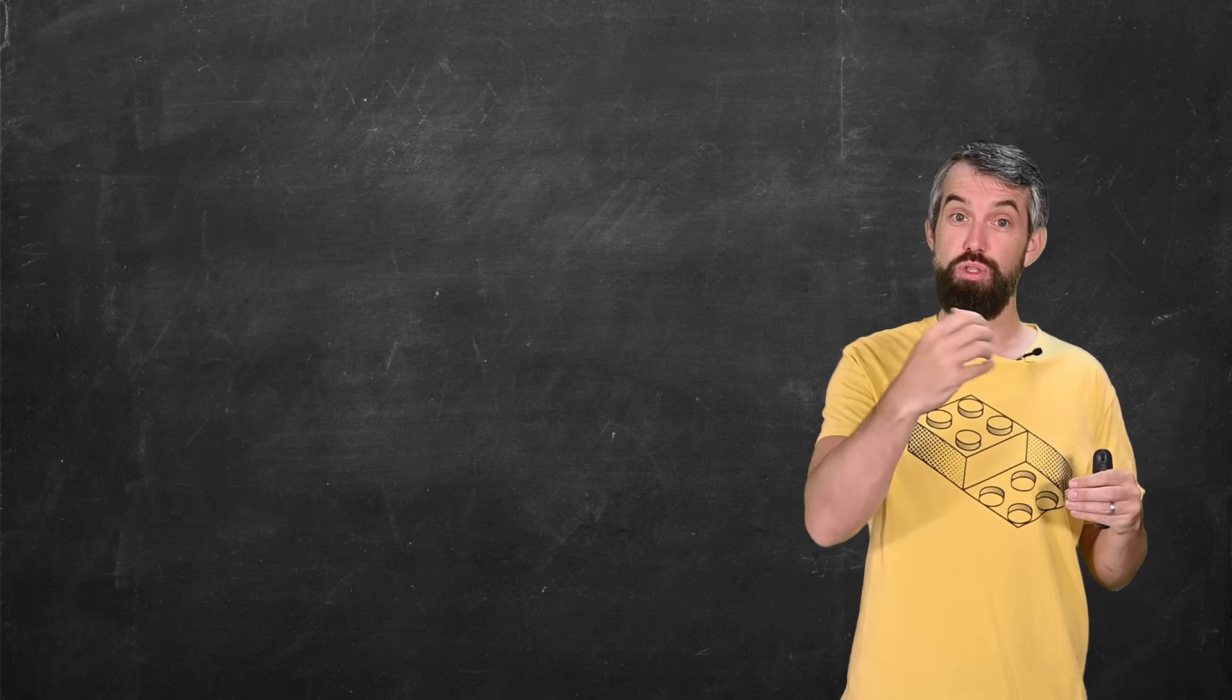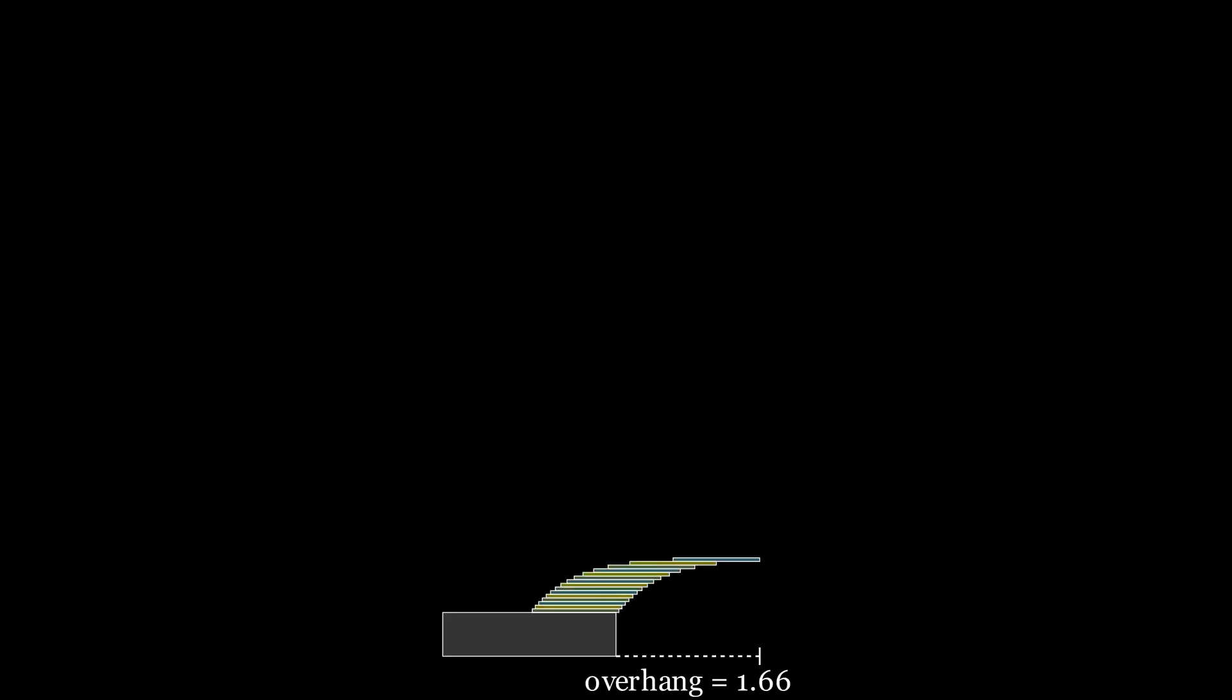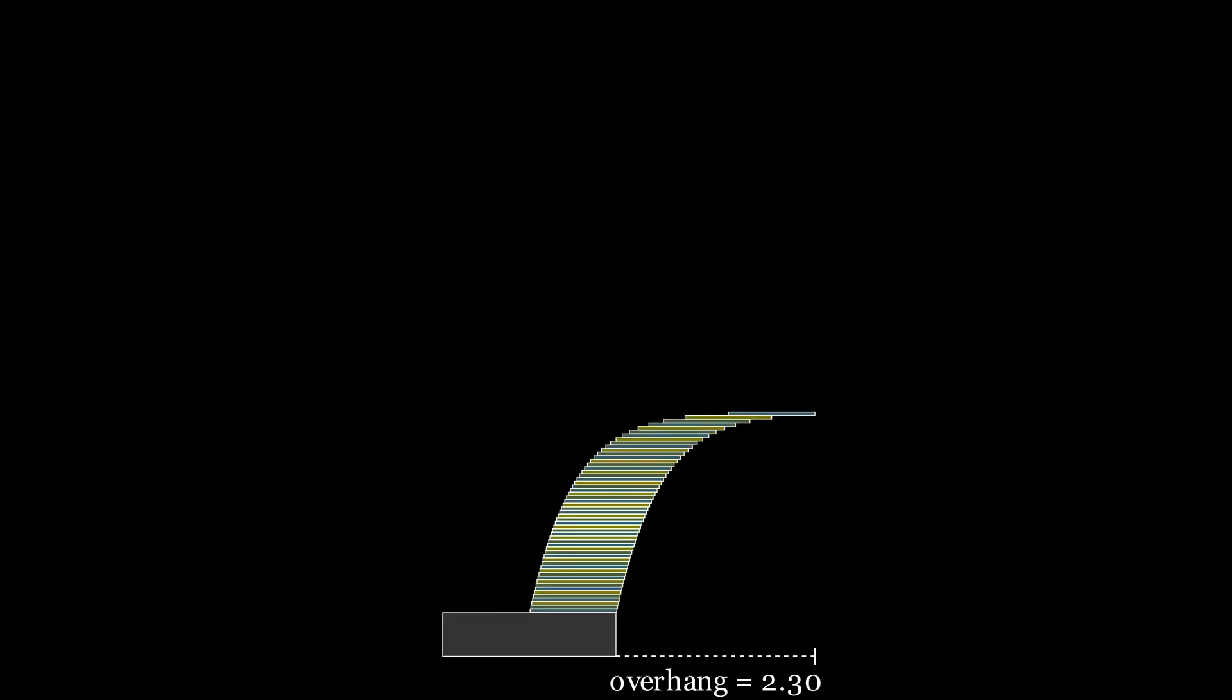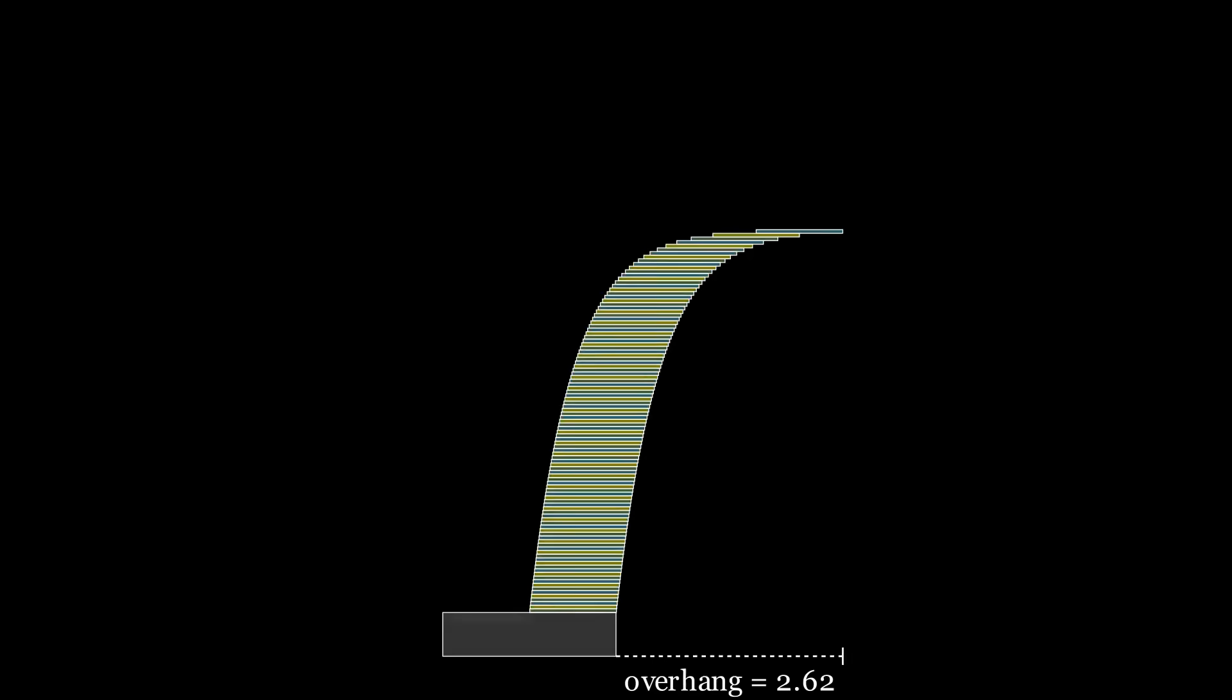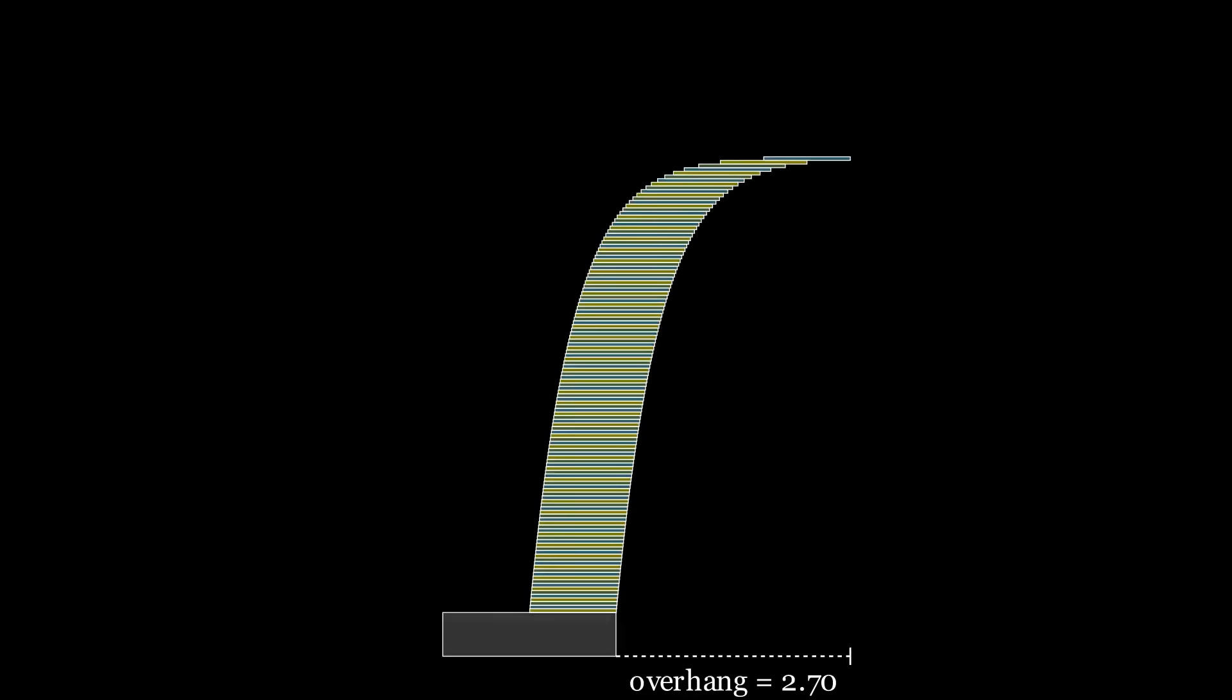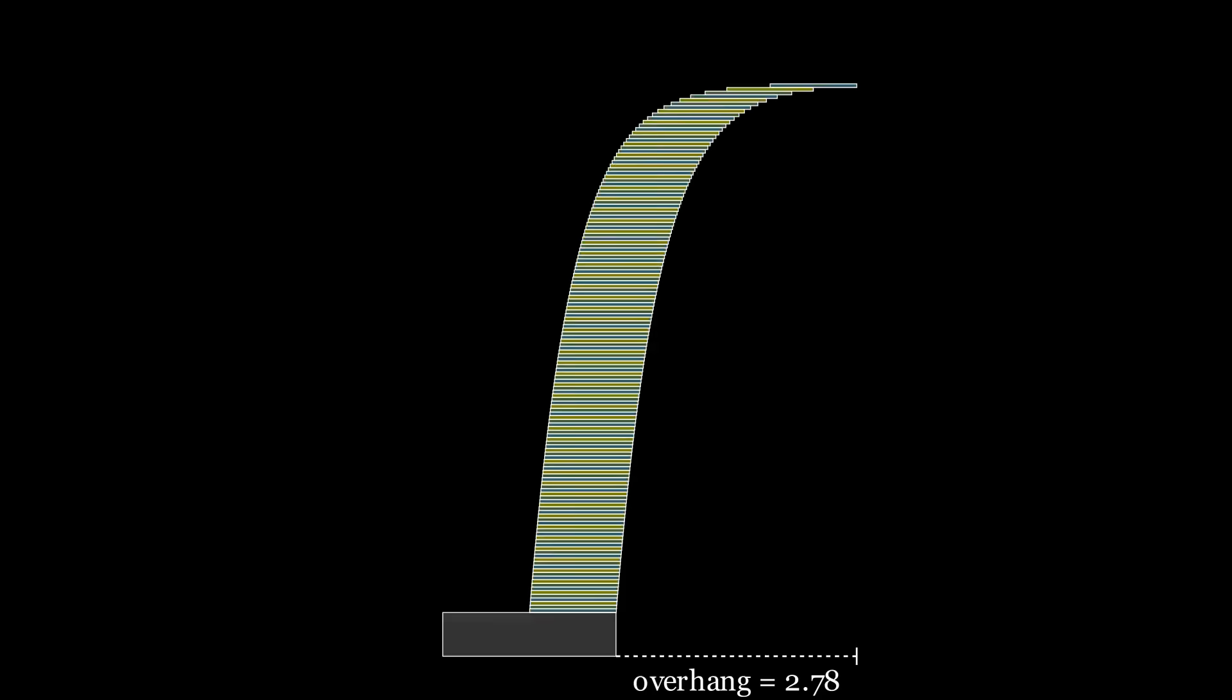Instead of looking at small values of n and asking what is the optimal stack for a small n, instead let's look at very large values of n. We'll ask the asymptotic question of how far can these overhangs grow as a function of the number of blocks.